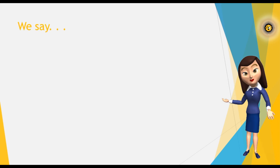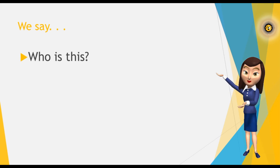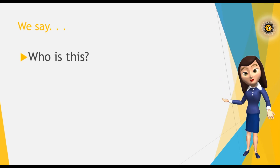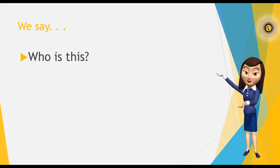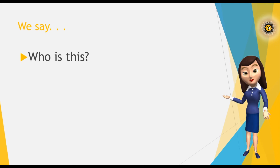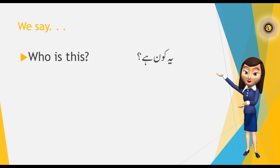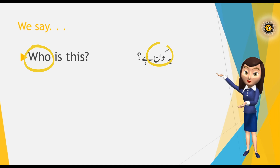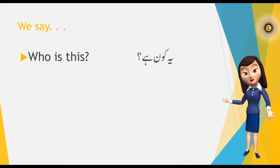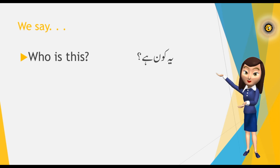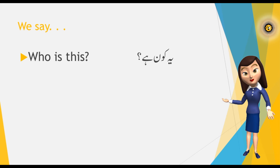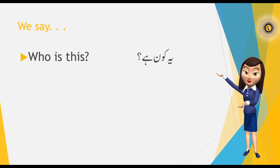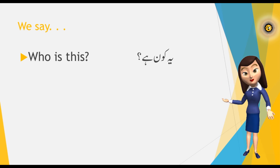We say 'Who is this?' — the word 'who' is used for people. In Urdu, 'who' is 'Koon.' So when asking about people, we say 'Koon,' just as we say 'who' in English. 'Who is this?' in Urdu is 'Yeh Koon Hai.'